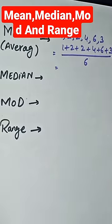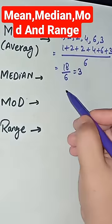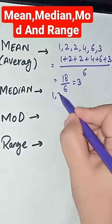So the answer is 18 divided by 6 which is 3. For median, arrange numbers from the smallest to the largest numbers.